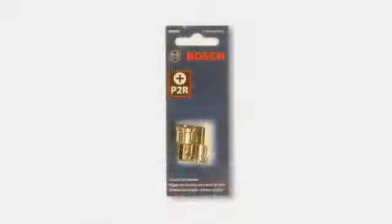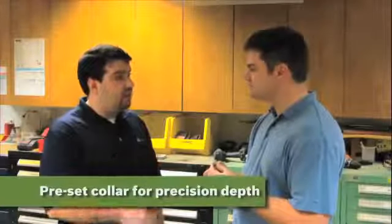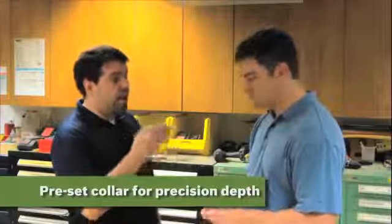Now what's one of the other options out there? This is a P2R with a collar, which means that the collar is preset so the screw is designed to sit perfectly into your drywall. Gotcha. This will go in a magnetic bit tip holder. Screw will stay magnetic.